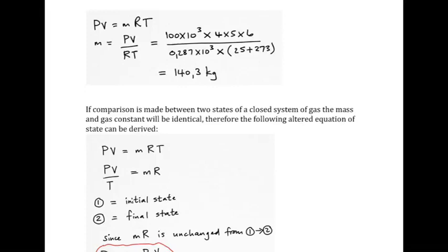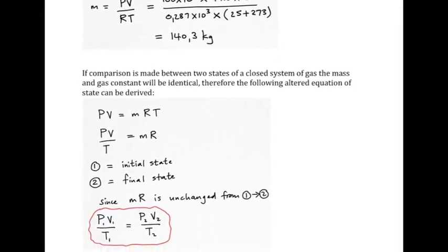Taking that further, using PV = MRT for a closed system moving from one state to another, we can make MR the subject of the equation. Since the mass and R value for a substance in a closed system do not change as it changes state, if MR is PV/T, then the first set of PV/T values must equal the second set: P₁V₁/T₁ = P₂V₂/T₂, where 1 is the initial state and 2 the final state.